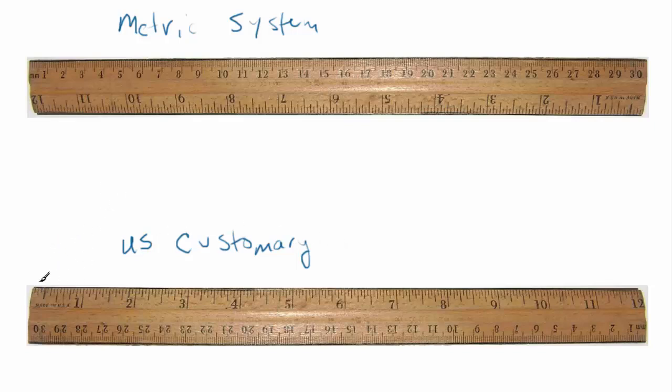So now the difference is, in the U.S. customary system, we have 12 units on a ruler compared to the metric system, which has 30 units, and depending on the ruler, five millimeters. We'll get into that in a second.